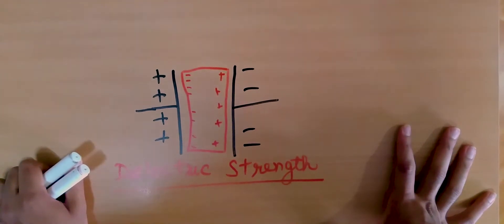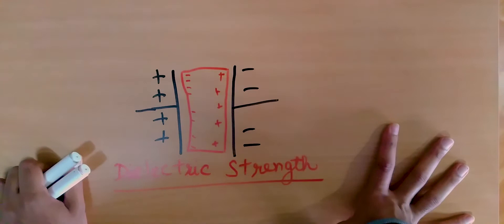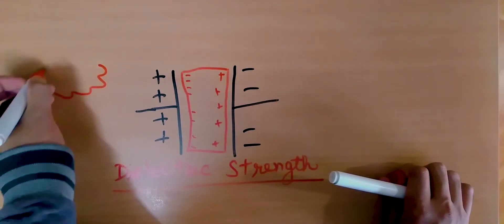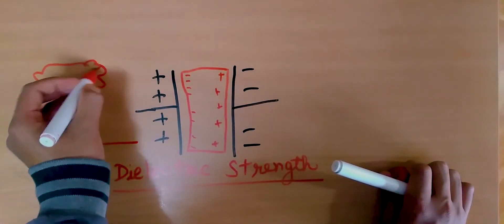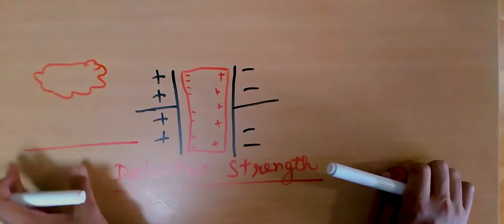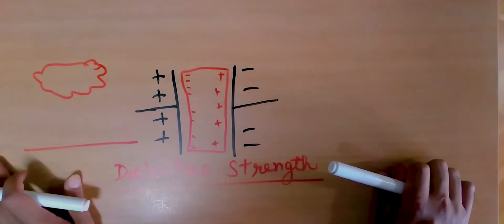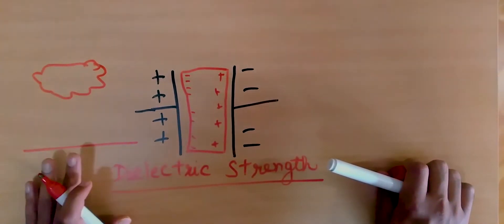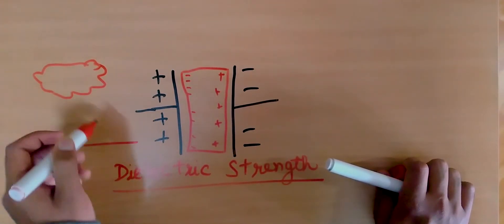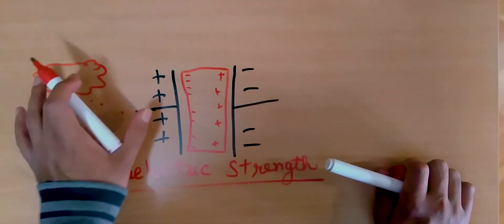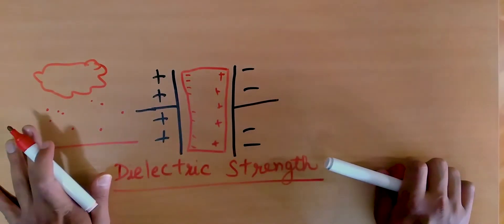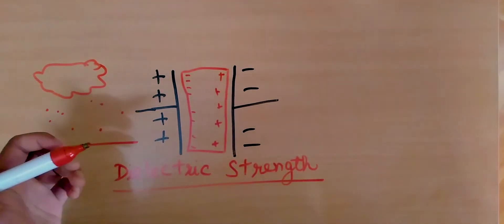A very small example: if you've ever seen lightning bolts outside during thunderstorms, what actually happens is that you have charged clouds and the ground. The clouds and the ground act as a capacitor because there is some charge difference between them. The dielectric in this case is the air of the atmosphere — the air between the cloud and the ground acts as the dielectric of this capacitor.